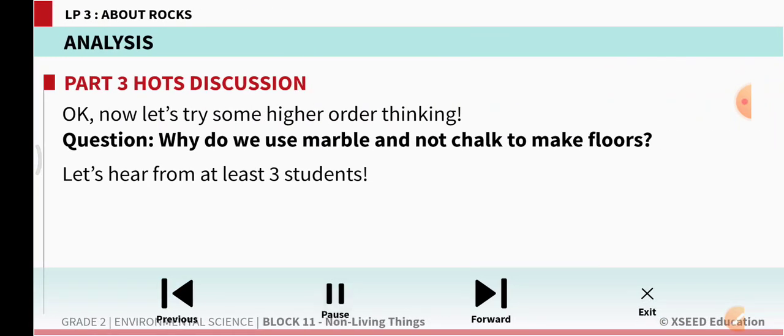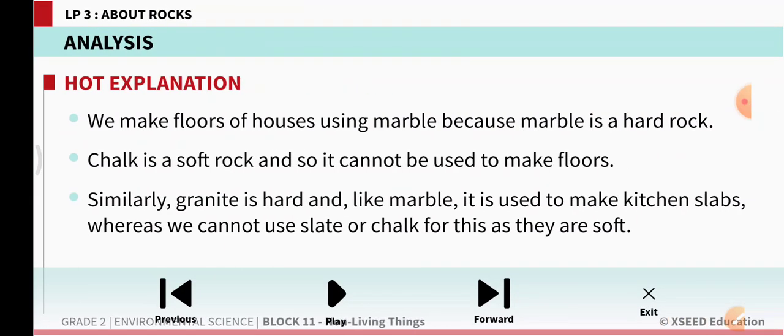Now why do we use marble and not chalk to make floors? Chalk is not used to make floors, but marble is used. Why? We make floors of houses using marble because marble is a hard rock. Chalk is a soft rock and so it cannot be used to make floors. Similarly, granite is hard and like marble it is used to make kitchen slabs, whereas we cannot use slate or chalk for this as they are soft.